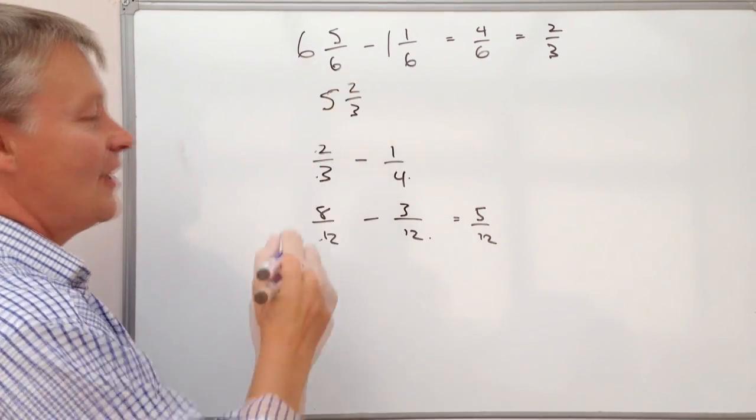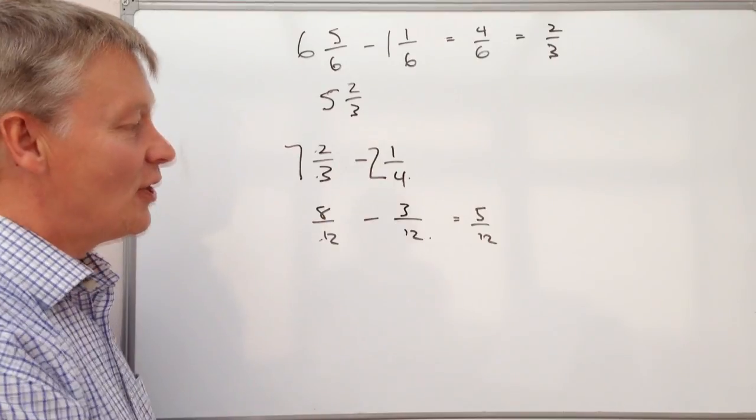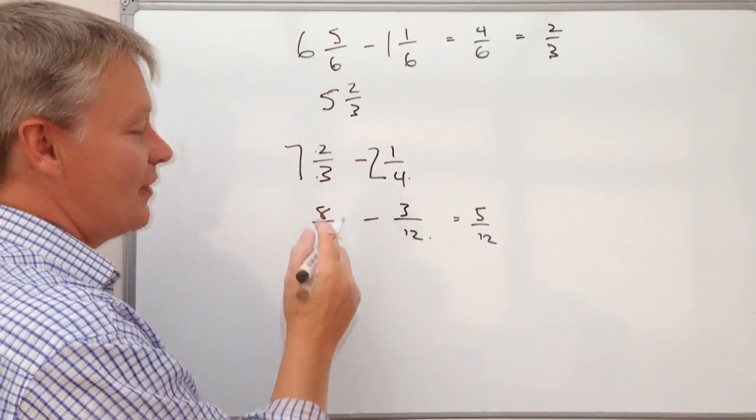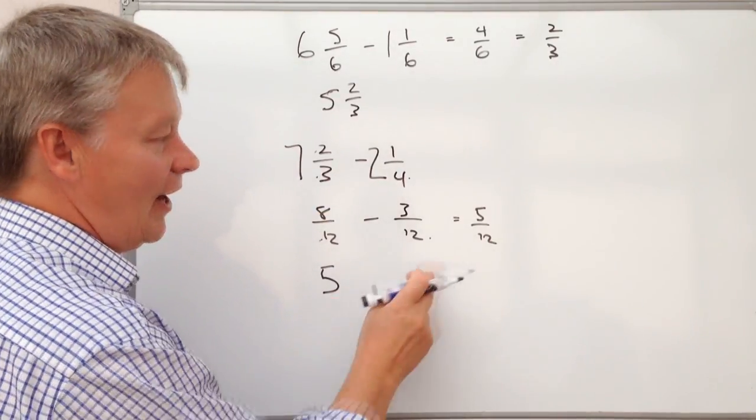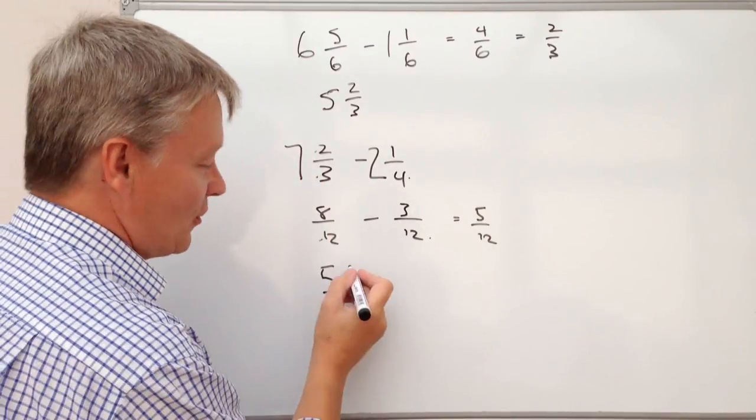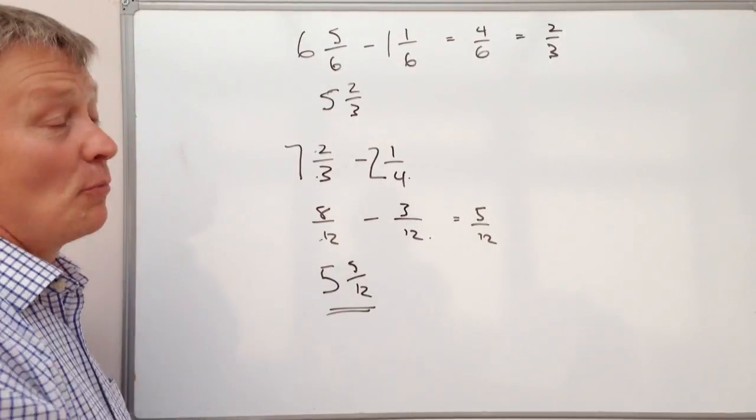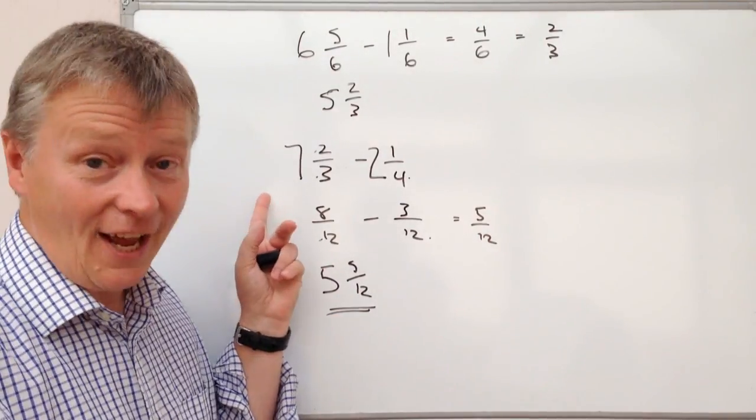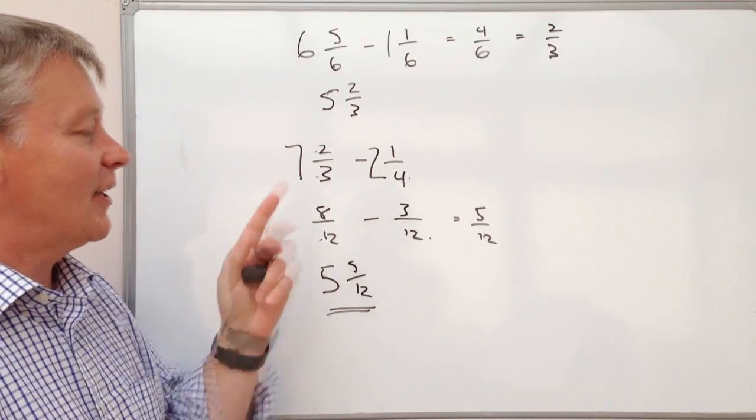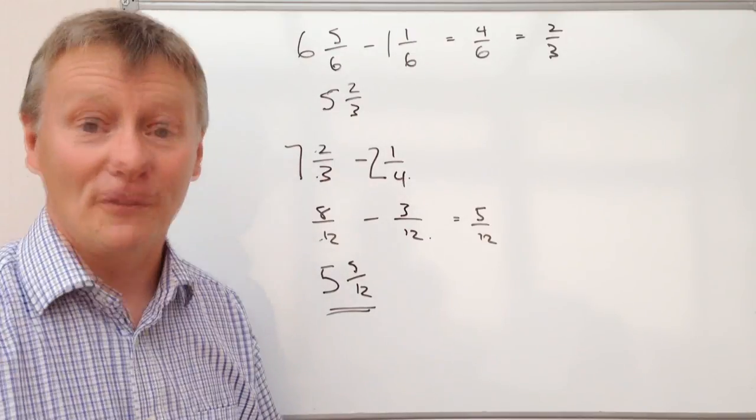Same thing as if we've got something like 7 and 2/3 take away 2 and 1/4, well, 7 take away 2 is 5. I've already worked out 2/3 take away 1/4 as 5/12, so that would be 5 and 5/12. This is more typical of an exam paper question, so 7 take away 2 is 5 and 2/3 take away 1/4 will be 5/12.